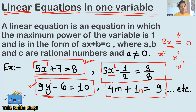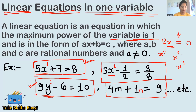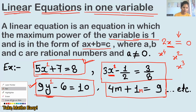So this is a linear equation in one variable. Let's read the full definition one more time: a linear equation is an equation in which the maximum power of the variable is one. The power of the variable will be one — no other number. And it is in the form of ax plus b equals to c.